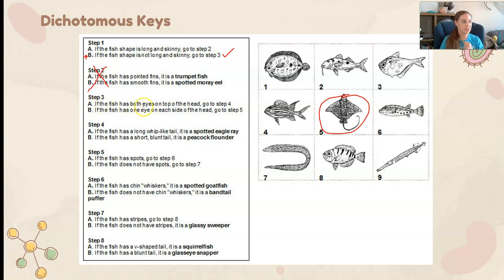If the fish has both eyes on the top of its head, go to step four. This is a fish — I covered where the eyes would be when I circled it — but yes, both eyes would be right here on top of the head. I'm going to go to step four, skipping step three B. Now: if the fish has a long whip-like tail, it is a Spotted Eagle Ray. Does it have a long whip-like tail? Yes — it must be a Spotted Eagle Ray.